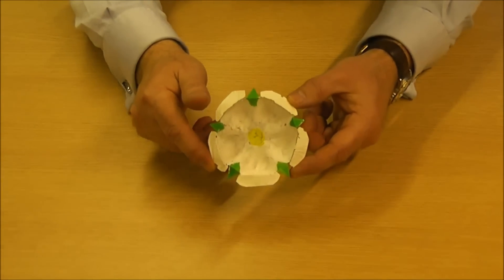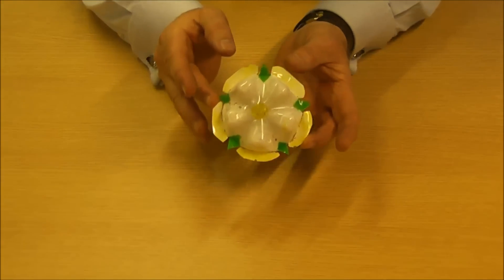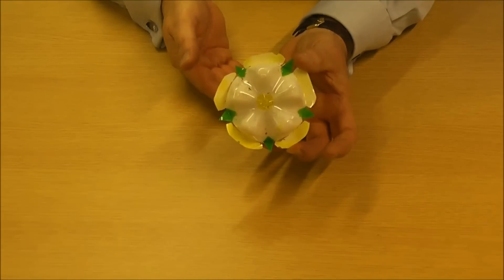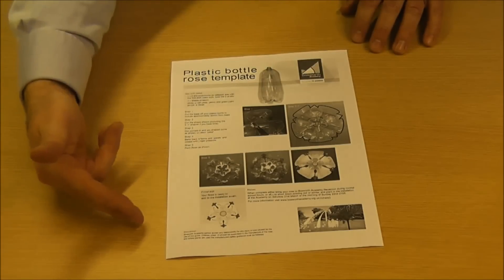We're going to make a rose to go on the installation that looks like this. This is the Yorkist rose. What you'll need to make that is the instruction leaflet which is on the website.